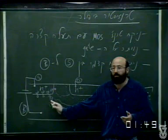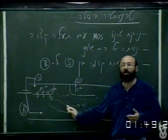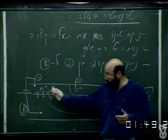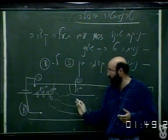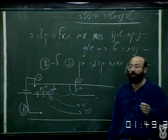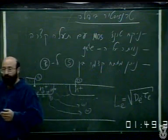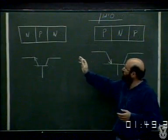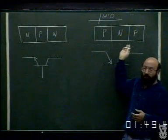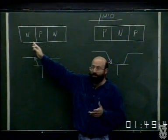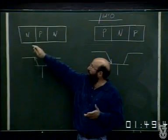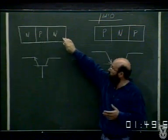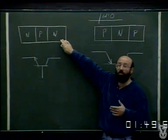מה שאני רוצה לעשות זה לחזור למבנה קצת יותר נוח לטיפול, והוא מבנה חד-ממדי. נניח שאנחנו מצליחים לייצר מבנים בצורת סנדוויץ'. הם אומרים שהטרנזיסטור הביפולרי הוא סנדוויץ'. יש לנו מבנה NPN או PNP. והמטרה שלנו זה שהצד השמאלי יהיה צד שמזריק נושאי מטען, הנושאי מטען יוזרקו לתוך אזור צר שנקרא לו בסיס.